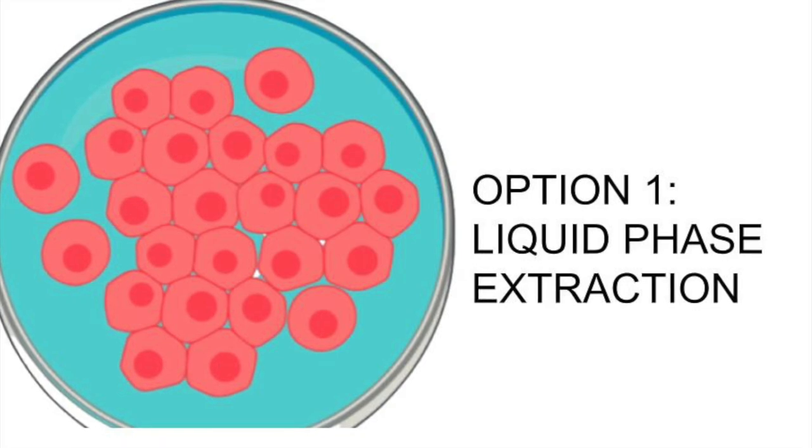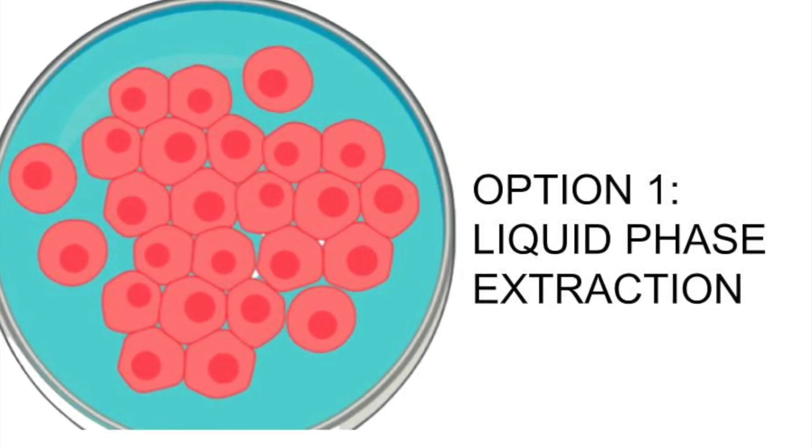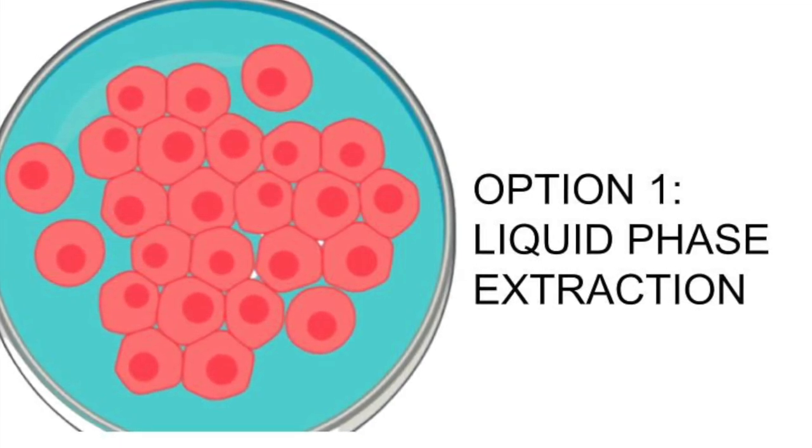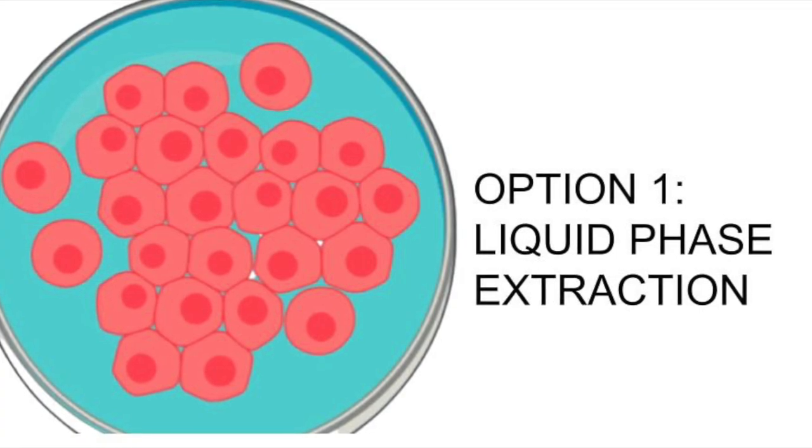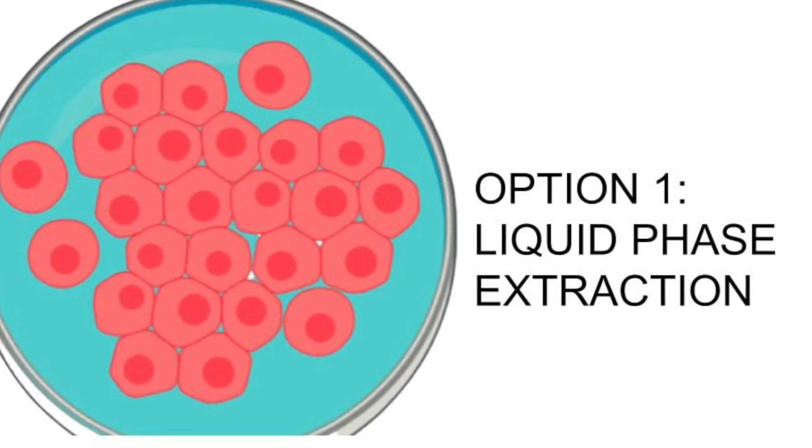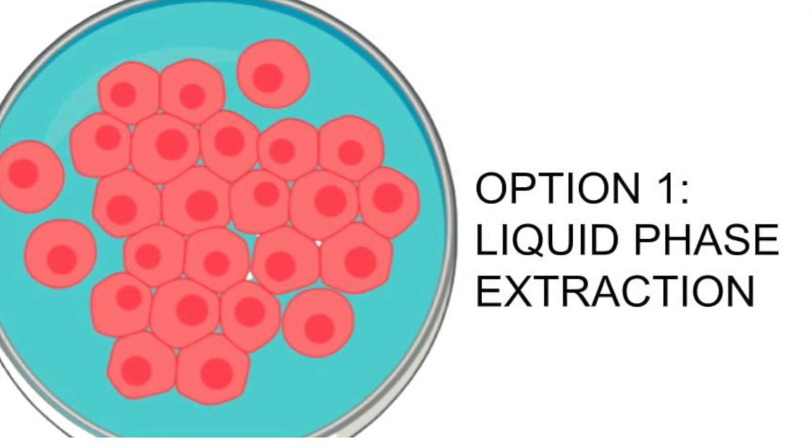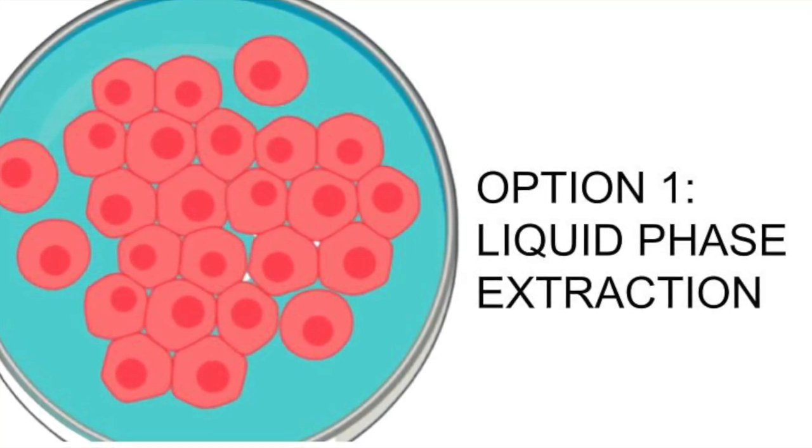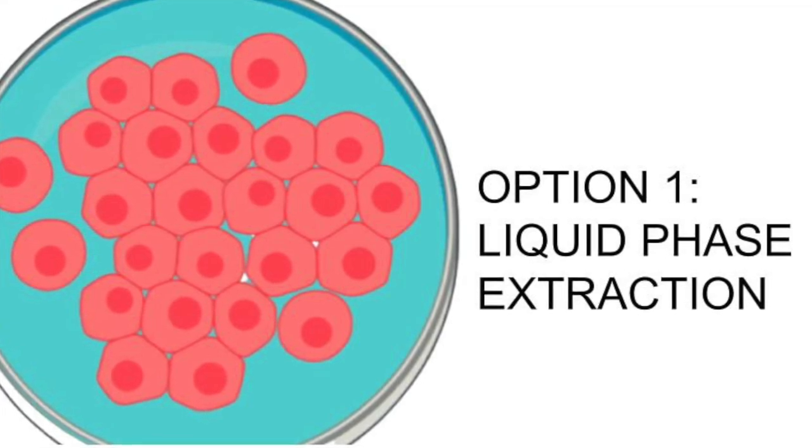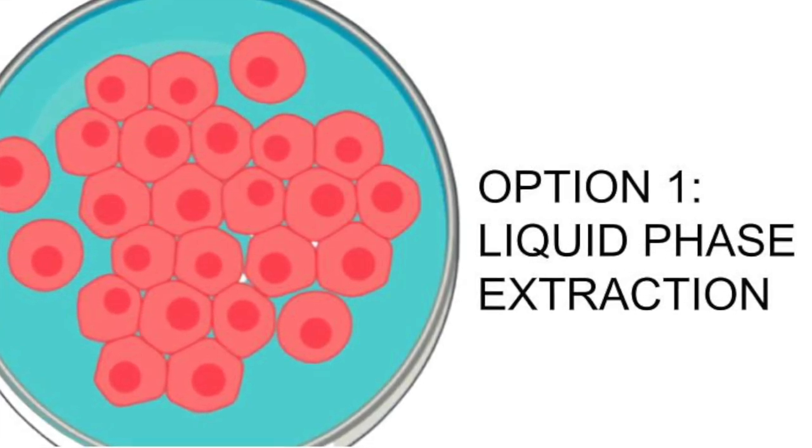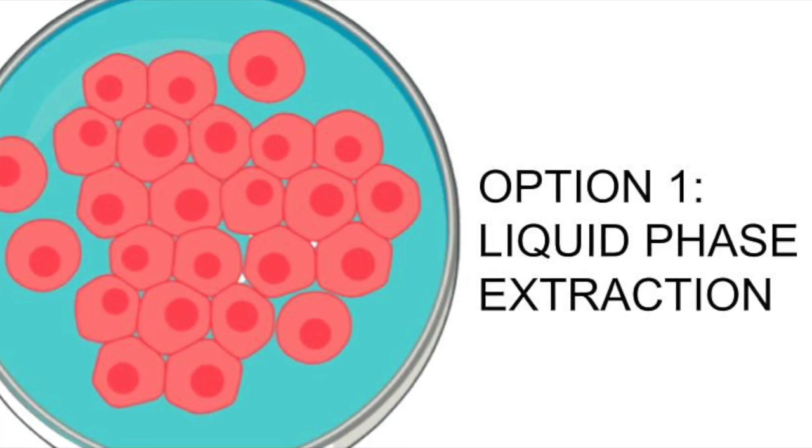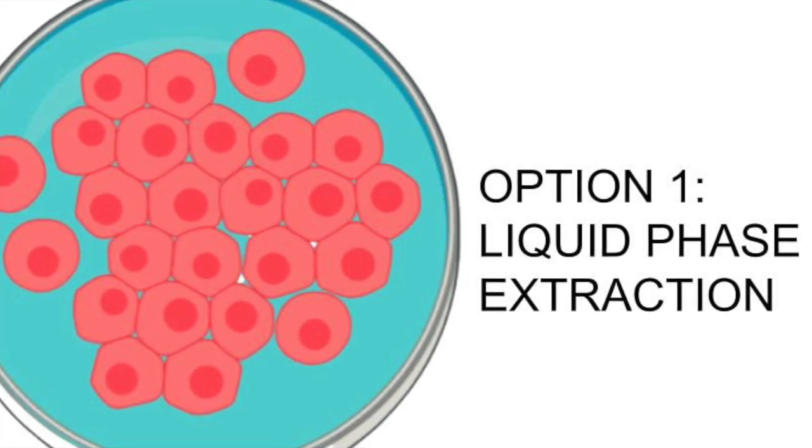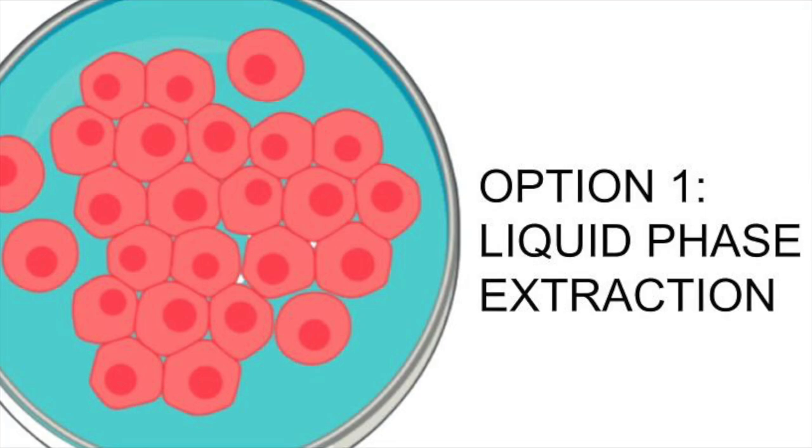The proteins, once we've emulsified it, move into the organic layer while the nucleic acids move into the aqueous layer on top. In between the aqueous and organic layer you will find a thin interface which contains lipids and other insoluble matter from the cell.